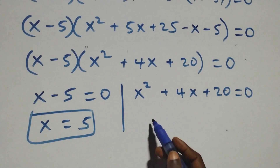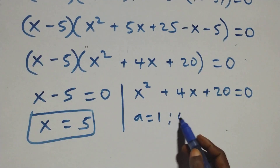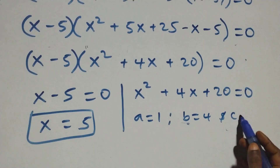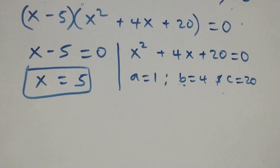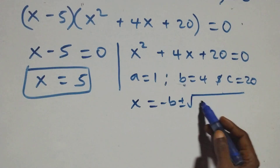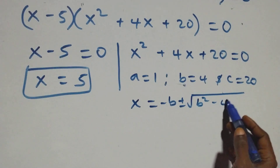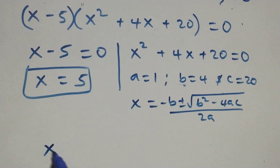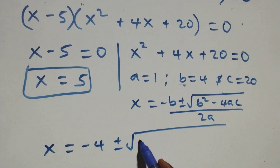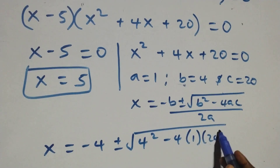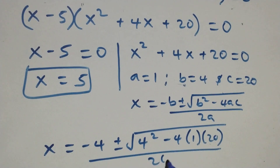For the second case we have a quadratic equation where a equals 1, b equals 4, and c equals 20. Applying the quadratic formula x equals (minus b plus or minus square root of b squared minus 4ac) over 2a, we substitute: x equals (minus 4 plus or minus square root of 16 minus 4 times 1 times 20) over 2 times 1.